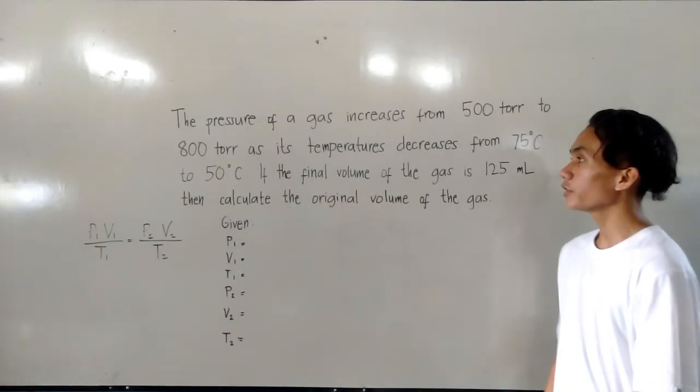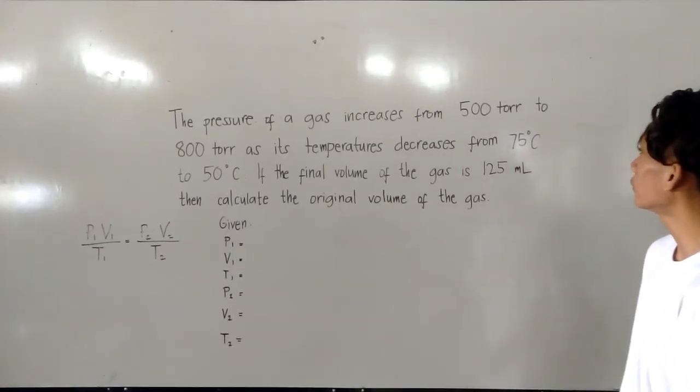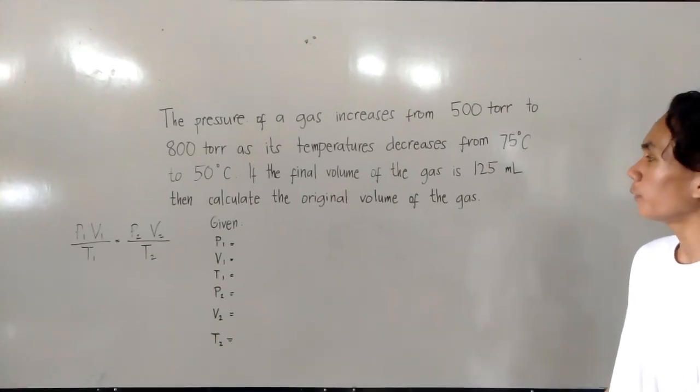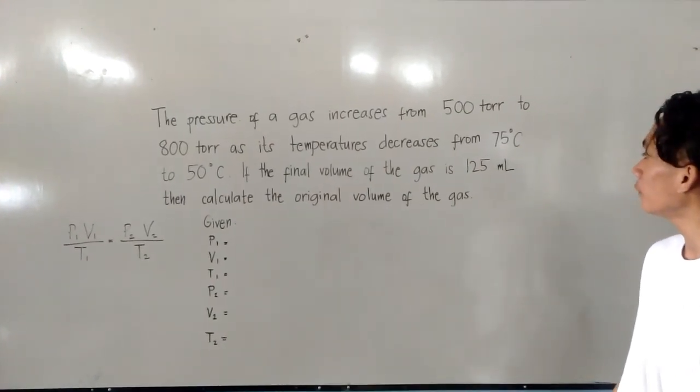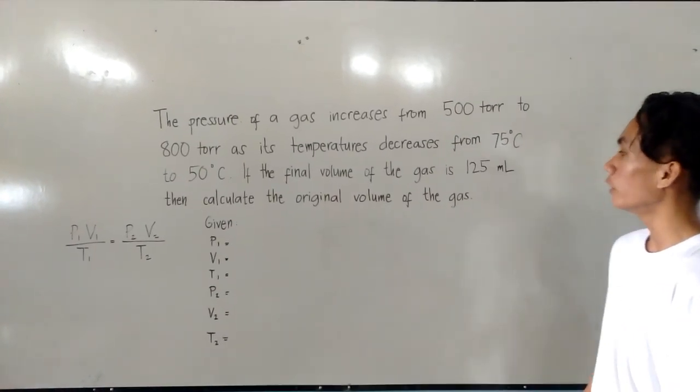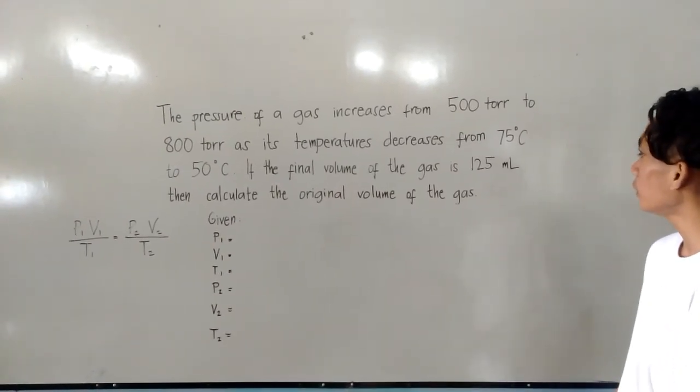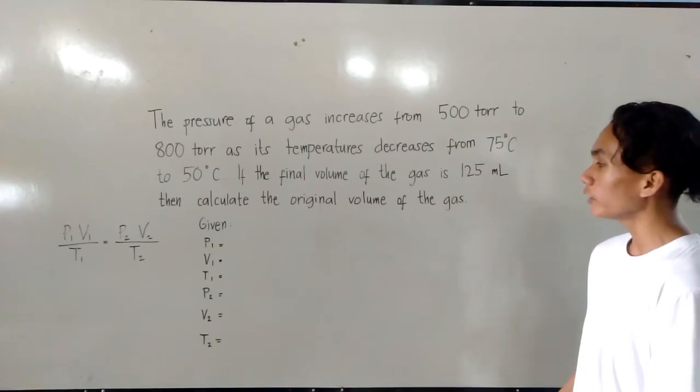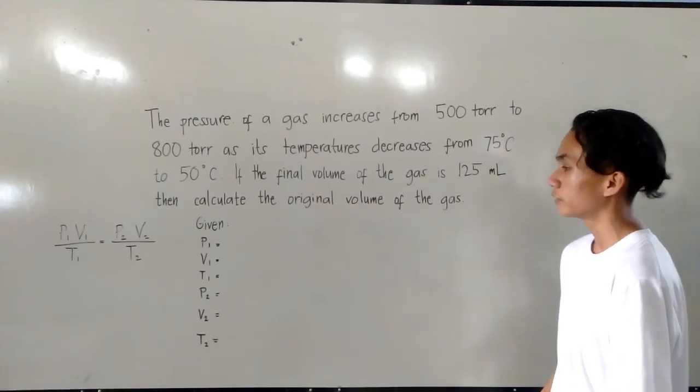Here's an example. The pressure of a gas increases from 500 torr to 800 torr as its temperature decreases from 75 degrees Celsius to 50 degrees Celsius. If the final volume of the gas is 125 mL, then calculate the original volume of the gas.